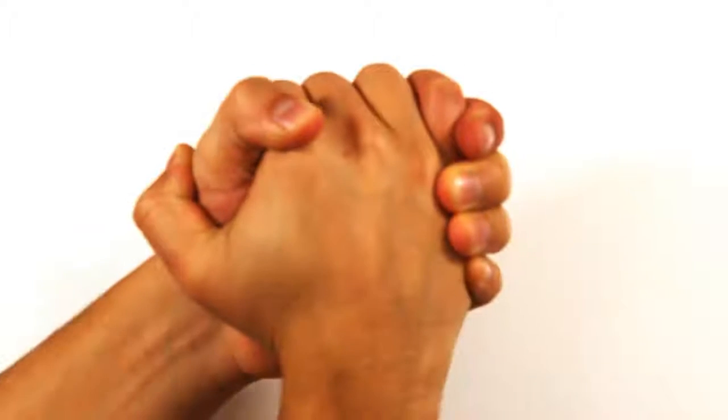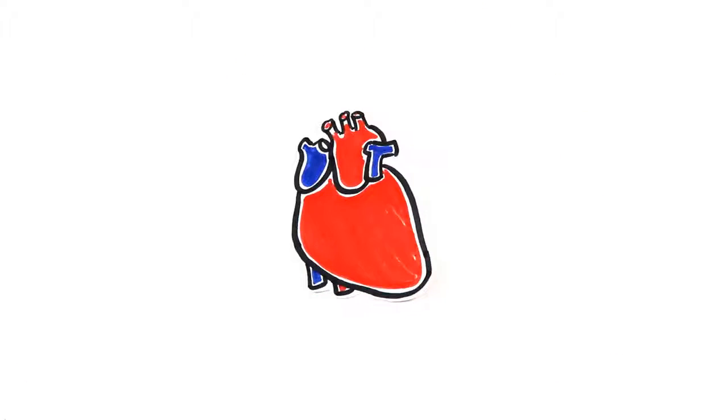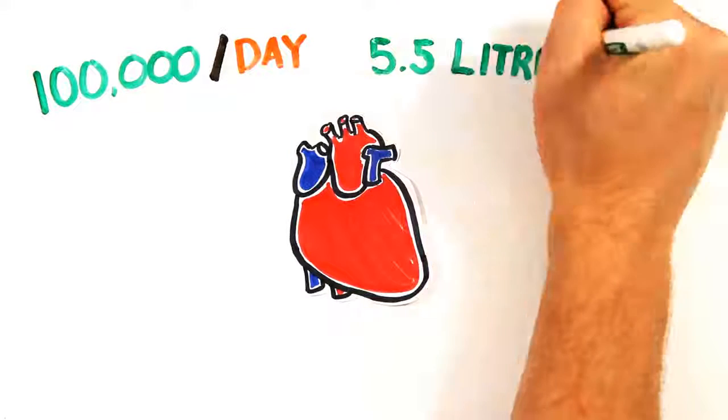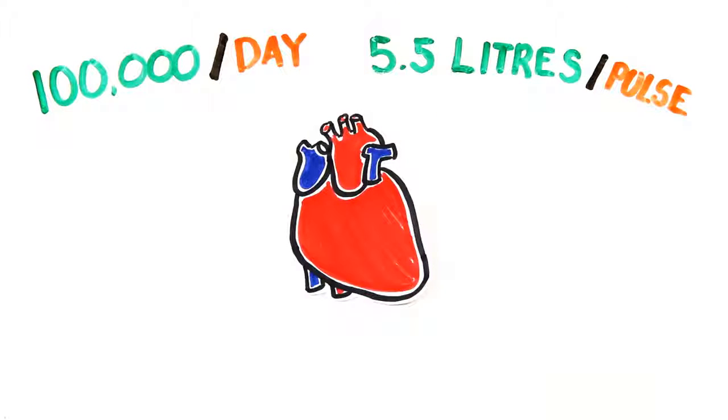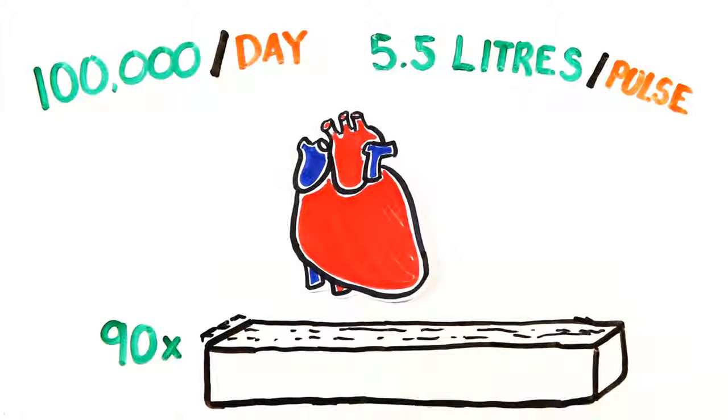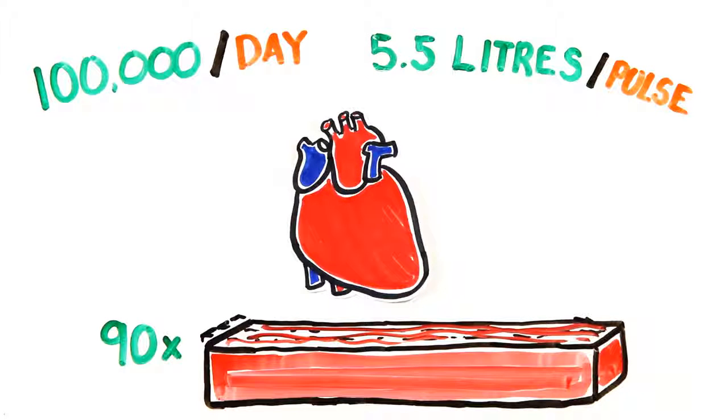Now clasp one hand into the other. That's roughly the size of your heart. It beats 100,000 times per day, pumping 5.5 liters with each pulse, which is close to 3 million liters of blood every year. If you lived to 75, it would fill 90 Olympic-sized swimming pools.